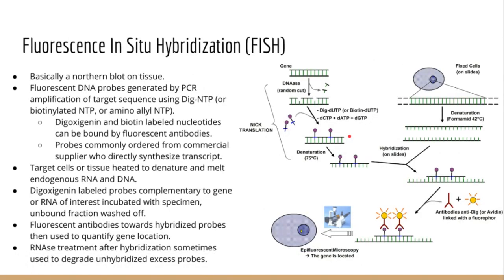The last fluorescence microscopy-based technique is FISH — Fluorescence In Situ Hybridization. The idea basically combines a northern blot and an immunofluorescence assay: we are visualizing the subcellular location of RNA or DNA in tissue by the hybridization of fluorescently labeled probes. Like a northern blot, we first need to generate probes by extracting and purifying DNA, then amplifying the antisense transcript towards your gene of interest using sequence-specific primers. When doing this we don't use regular nucleotides — we use something like a radiolabeled nucleotide, nucleotides with reactive amino groups that can be bound by fluorescent dyes, or biotinylated nucleotides.